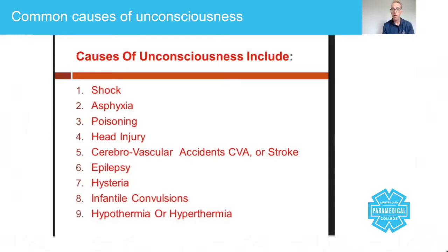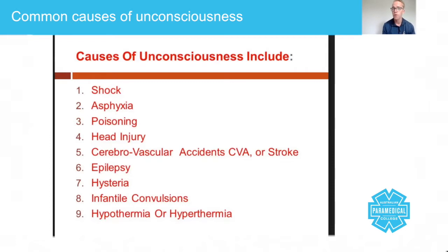Hysteria or extreme emotional states are quite common — if somebody is hyperventilating, for example, the body will just switch off and reset itself. Infantile convulsions are usually caused by hyperpyrexia, because children can't control their body temperature the same way adults do — they don't have the same shivering mechanism.